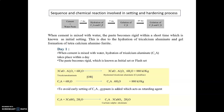When cement is mixed with water, the paste becomes rigid within a short time, which is known as initial setting, and this is due to the hydration of tricalcium aluminate. Once a water molecule is added to tricalcium aluminate (C3A), gel formation of tetracalcium aluminate occurs. The chemical formula of tricalcium aluminate undergoes hydration — addition of water — and gets converted to hydrated tricalcium aluminate crystalline, releasing energy of 880 kJ per kilogram.